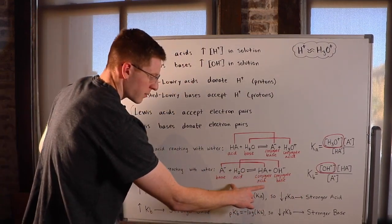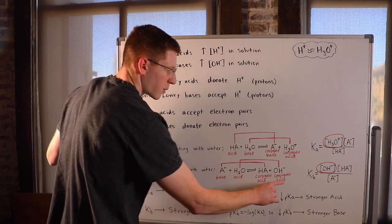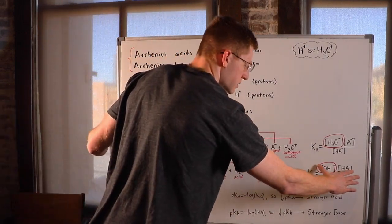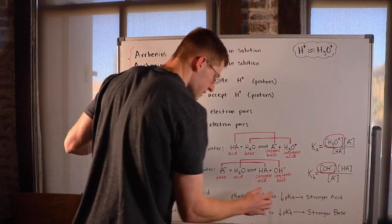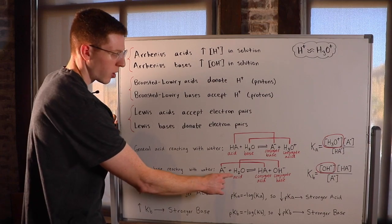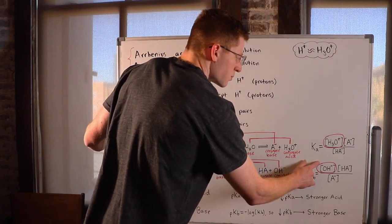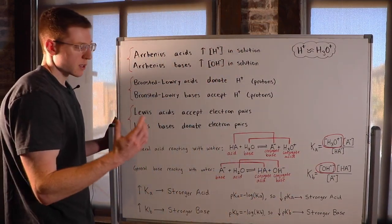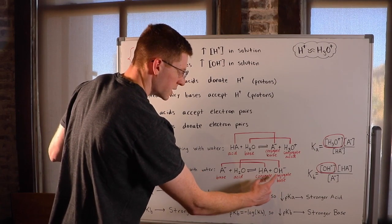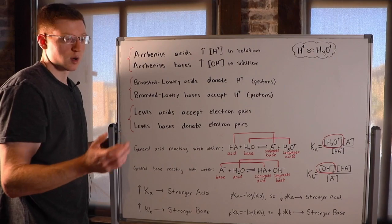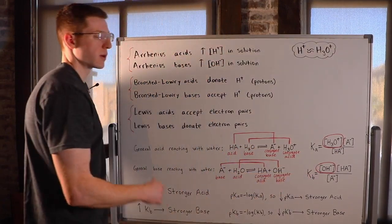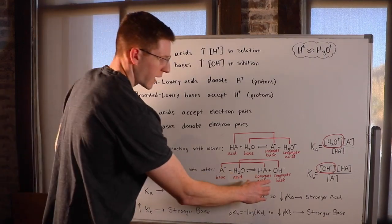If we were going to write the equilibrium expression for this base down here, we would call it K-sub-B. B is for base. We've got the product concentrations in the numerator and the reactant concentrations in the denominator. We again excluded pure liquids in water. So OH- is really what's going to drive the pH in this solution here. It's really going to determine what the pH is. Everything else is going to have a very minor effect. So really, this is the only chemical we care about when we're doing acid-base problems in a reaction like this.